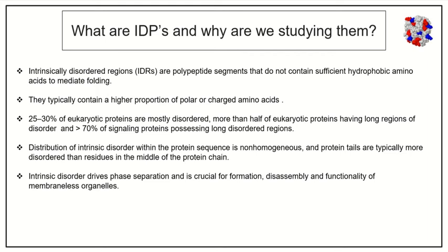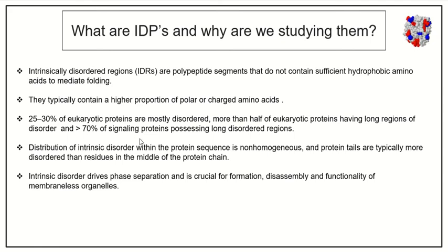What are IDPs or intrinsically disordered proteins and why are we studying them? Intrinsically disordered proteins are polypeptides that possess a high proportion of charged amino acids and they possess significantly low proportion of hydrophobic amino acids. Almost 30% of eukaryote protein is composed of intrinsically disordered regions and more than 70% of signaling proteins possess disordered regions. So you can have an idea of their significance in eukaryotes.